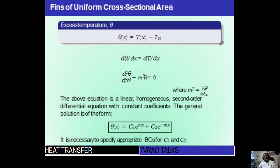This is a second-order homogeneous differential equation. For such a differential equation, the solution is θ = C1·e^(mx) + C2·e^(−mx), where C1 and C2 are constants. To find C1 and C2, you have to apply the boundary conditions. Boundary conditions are different for different types of fins, and those will be discussed in the next class.